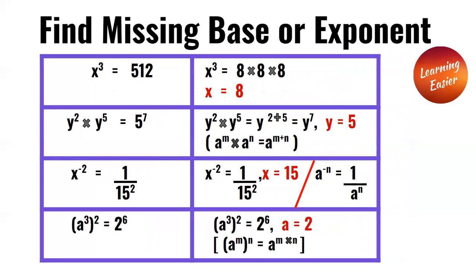x to the power of 3 is equal to 512. x to the power of 3 is equal to 8 times 8 times 8, so x is equal to 8.